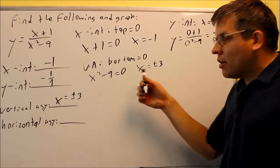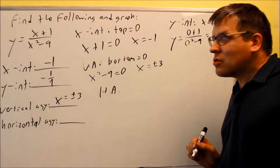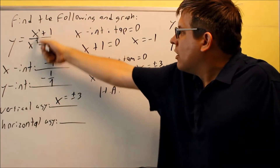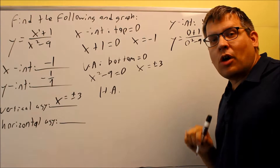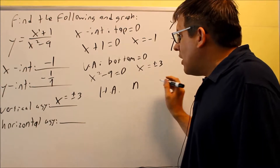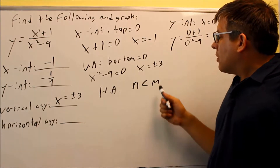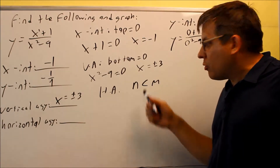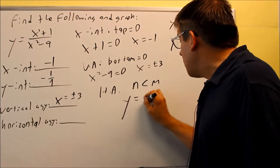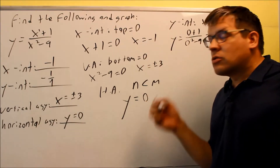Now I want to find the horizontal asymptote. The rules look at the highest power on top (n) and the highest power on the bottom (m). In this case, n is less than m, so we use rule number one: when the highest power on top is less than the highest power on the bottom, the horizontal asymptote is automatically y equals 0.